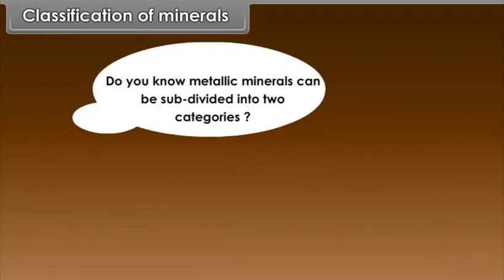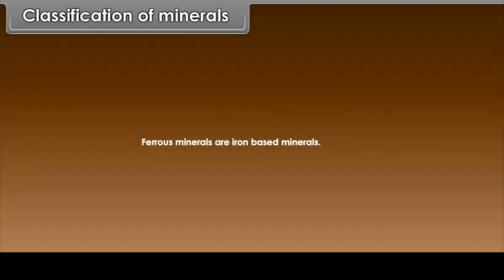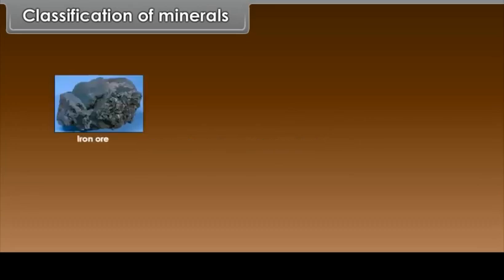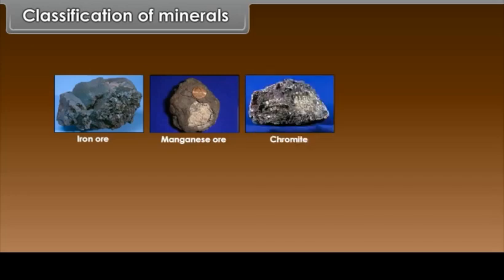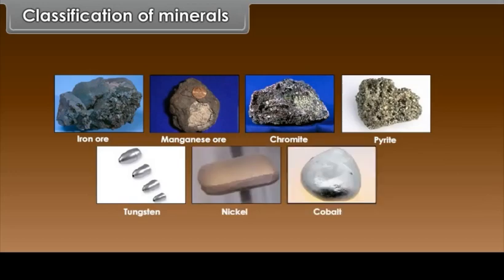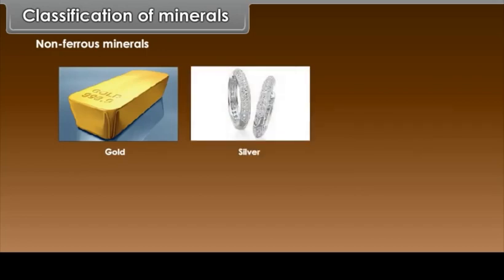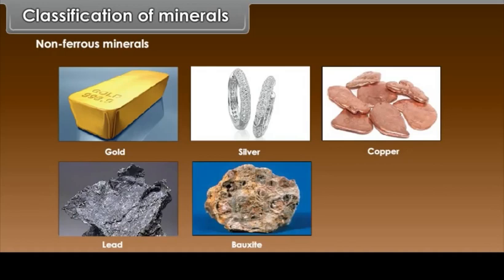Metallic minerals can be subdivided into two categories: ferrous and non-ferrous minerals. Ferrous minerals are iron-based, such as iron ore, manganese ore, chromite, tungsten, nickel and cobalt. Non-ferrous minerals contain metals other than iron, such as gold, silver, copper, lead, bauxite and tin.